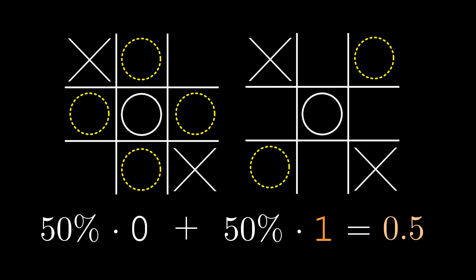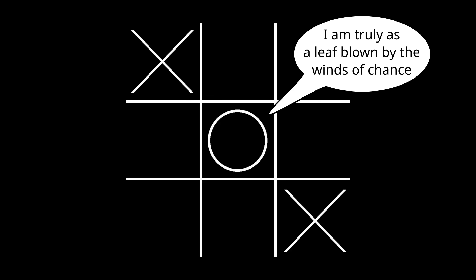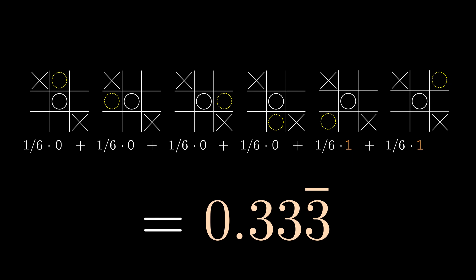Funnily enough though, if O is selecting their next move completely randomly and with no understanding of the symmetry of the position, the expected value of the position is 1/3, since there are four edges that will lead to a draw and only two corners that will lead to X winning.